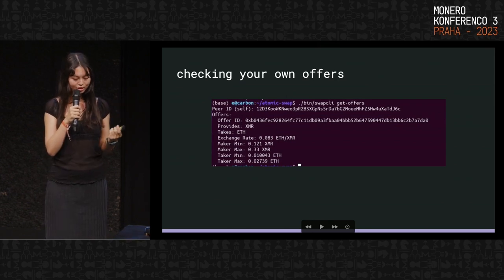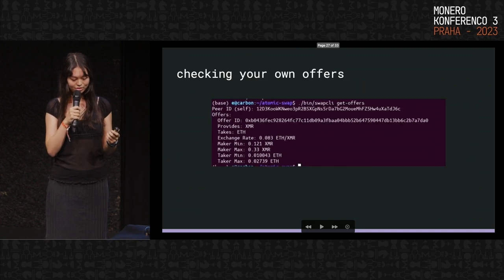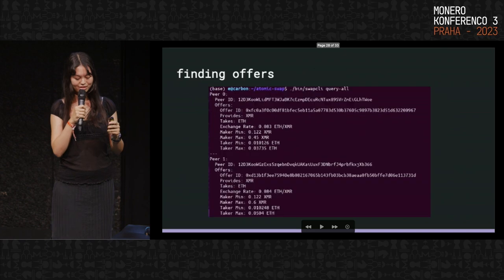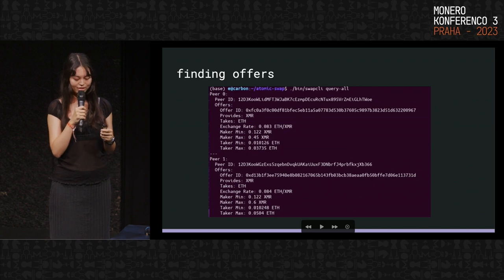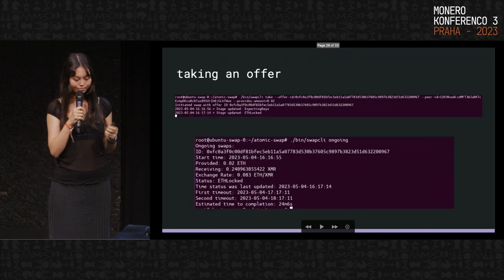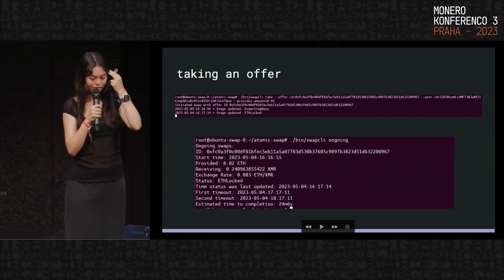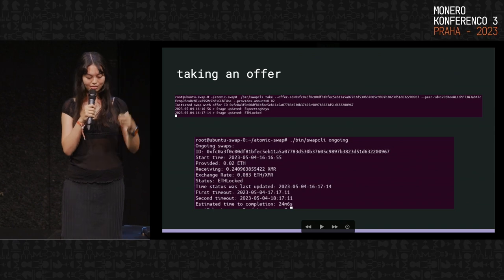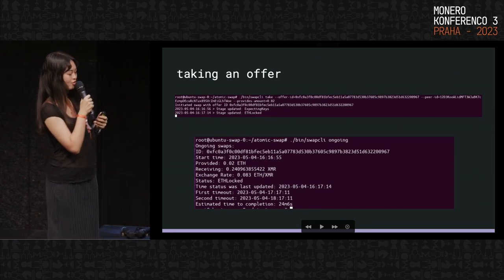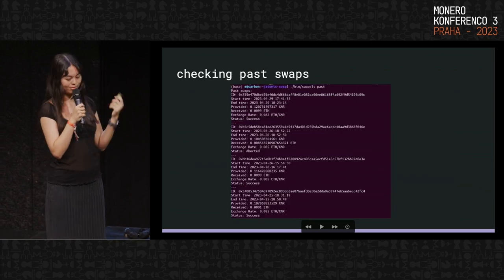To search the network for offers, you do 'swap CLI get offers' and you can see offers on the network. One command is for getting your own offers and the other is for checking offers on the network. When you see one you like, you can just do 'take' and pass in the offer ID, the peer ID — which is the remote node's libP2P ID — and the amount you're going to provide in ETH, and then it'll start the swap. You can check your ongoing swaps as well with the 'ongoing' command, and check past swaps with the 'past' command.